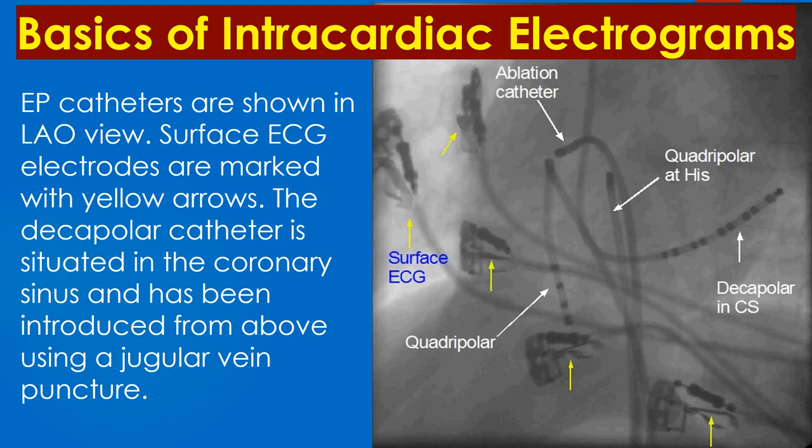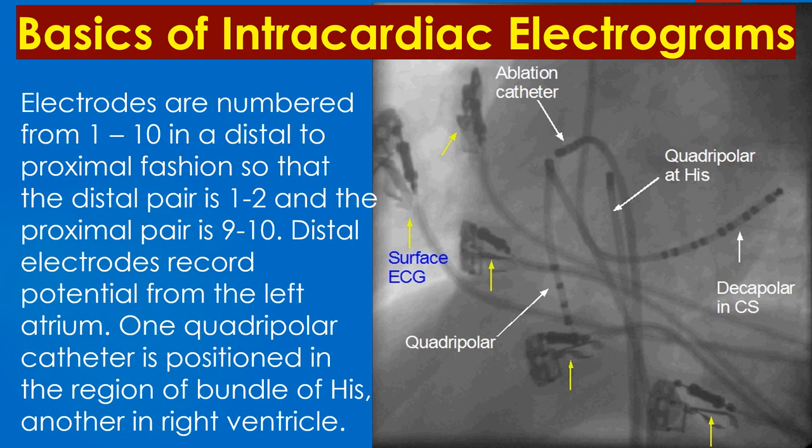Electrophysiology catheters are shown in the left anterior oblique view. The surface ECG electrodes are marked with yellow arrows. The decapolar catheter is situated in the coronary sinus and has been introduced from above using a jugular vein puncture. Electrodes are numbered from 1 to 10 in a distal to proximal fashion, so that the distal pair is 1,2 and the proximal pair is 9,10.